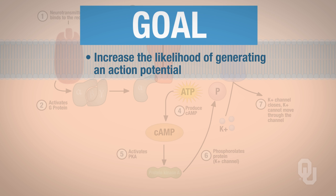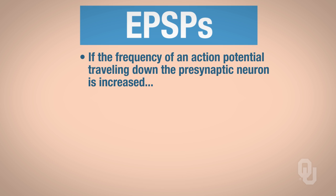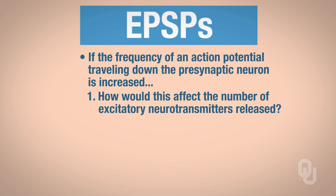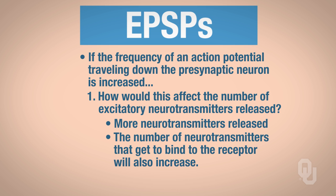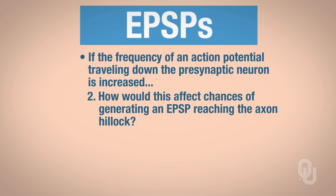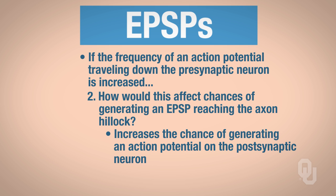If the frequency of action potentials traveling down the presynaptic neuron is increased, how would this affect the number of excitatory neurotransmitters released? We're going to release more neurotransmitters because there are more action potentials coming down the presynaptic neuron. So the number of neurotransmitters that get to bind to the receptor will also increase. How would this affect the chances of generating an EPSP reaching the axon hillock? That will also increase, which therefore increases our chances of generating an action potential on the postsynaptic neuron.